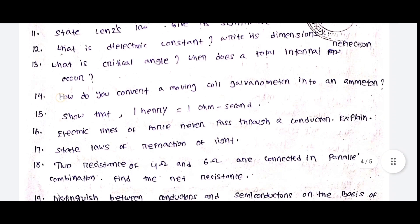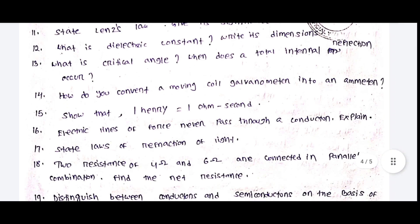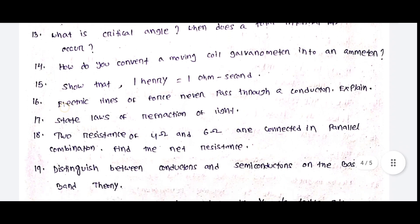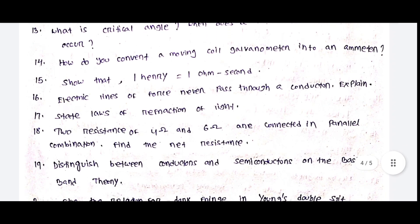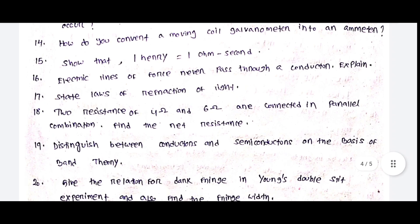What is critical angle? When does total internal reflection occur? How do you convert a moving coil galvanometer into an ammeter? So that 1 henry equals 1 ohm-second.